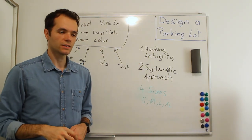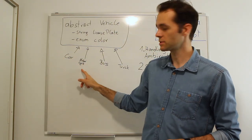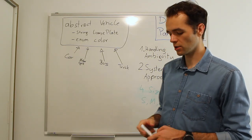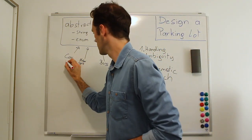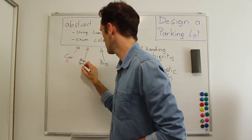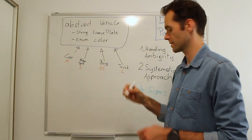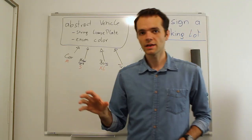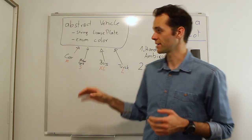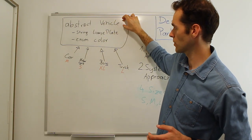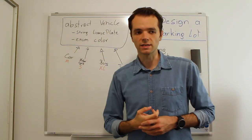We have this abstract vehicle and we want implementations of it. It makes sense to create four different classes that inherit from this abstract vehicle: a car, a motorcycle, a bus, and a truck. These correspond to medium, small, XL, and large respectively. In your preferred programming language, you would build this class hierarchy with the abstract class and those four concrete implementations.